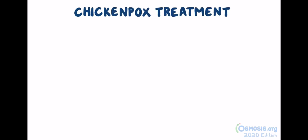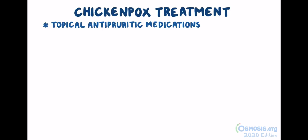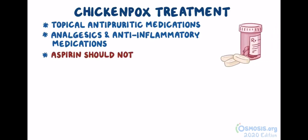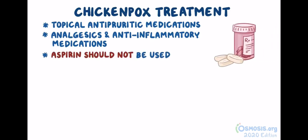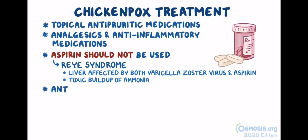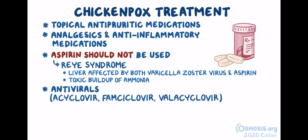Chickenpox treatment mainly includes the use of topical antipyretic medications to help reduce the itching. Also, analgesics and anti-inflammatory medications can help reduce the fever, but aspirin should not be used in someone with chickenpox because it can trigger Reye syndrome. In Reye syndrome, the liver gets affected by both varicella zoster virus and aspirin, and it leads to a buildup of ammonia in the body. In immunocompromised individuals, antivirals like acyclovir, famciclovir, and valacyclovir can be used.